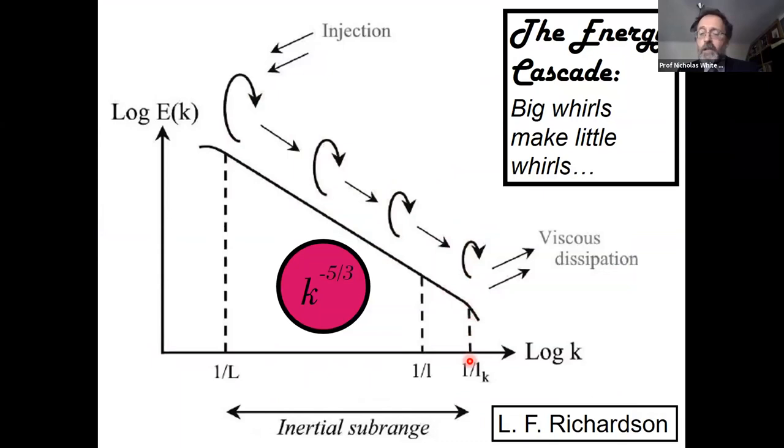Where does k to the minus 5/3 come from? In 1941, Andrei Kolmogorov, working in Moscow, published a really important paper on three-dimensional isotropic turbulence. He showed theoretically through dimensional analysis that 3D isotropic turbulence should go by k or wave number to the power of minus 5/3.